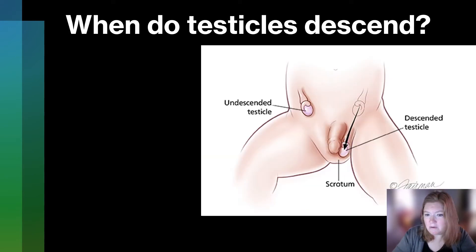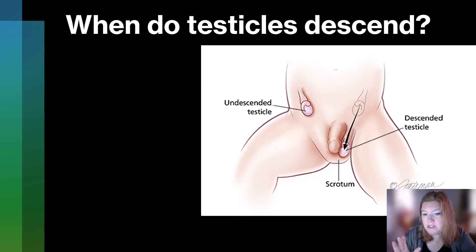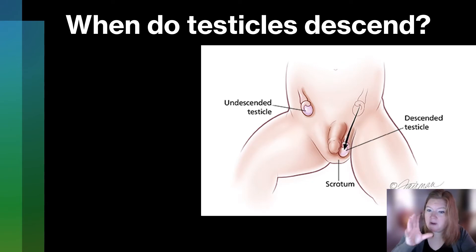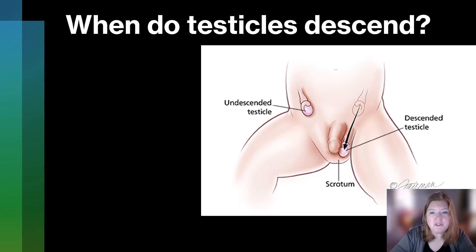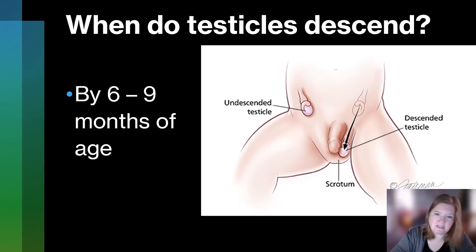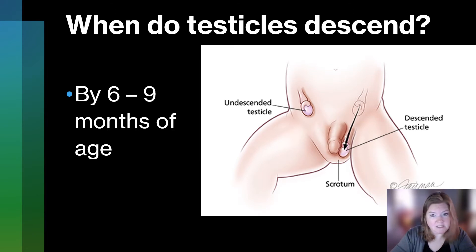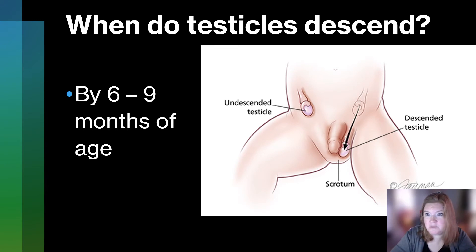Remember how at around six weeks there are big changes because of the SRY gene? Prior to that, embryos looked the same, so everything was being prepared to be internal. What has to happen is the testicles are going to have to descend into the scrotum, and this usually happens by around six to nine months of age. Medical professionals are going to check this when a child with a penis comes in for visits, to make sure the testicles have, in fact, descended into the scrotum.